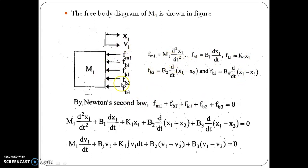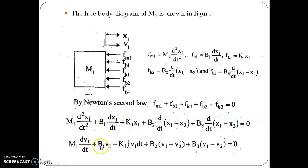By Newton's second law, the sum of all opposing forces equals zero since there is no applied force: m1·d²x1/dt² + b1·dx1/dt + k1·x1 + b2·d/dt(x1 − x2) + b3·d/dt(x1 − x3) = 0. Writing in terms of velocity: d²x1/dt² becomes dv1/dt, dx1/dt becomes v1, x1 becomes ∫v1 dt, and d/dt(x1 − x2) becomes (v1 − v2).